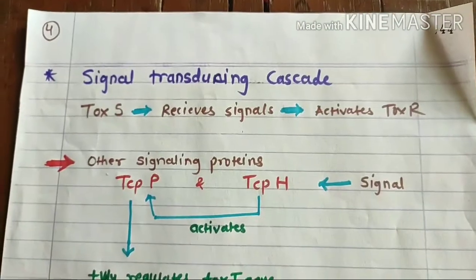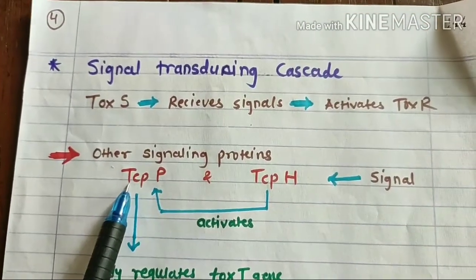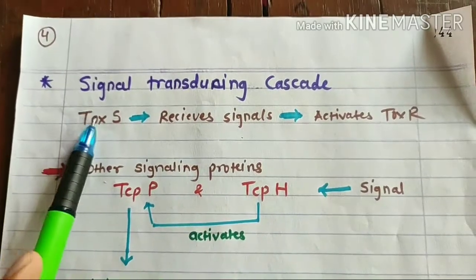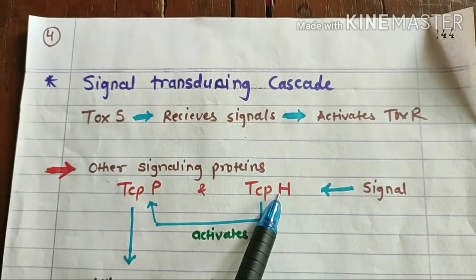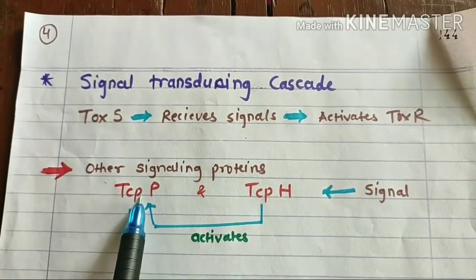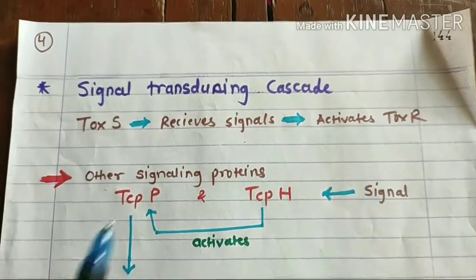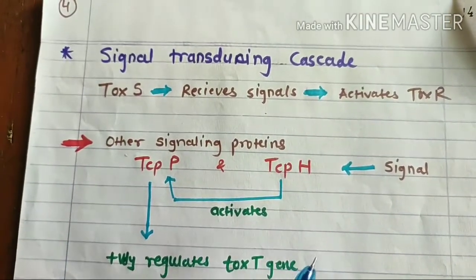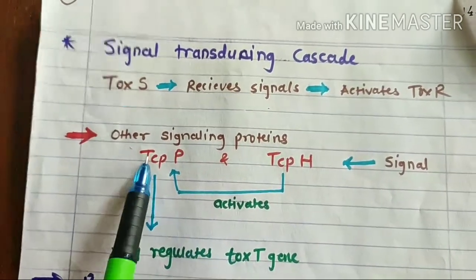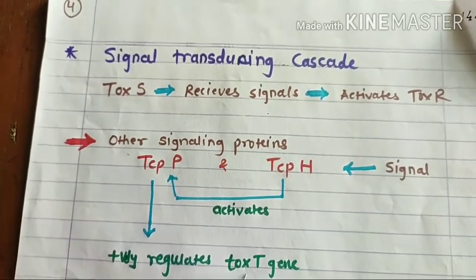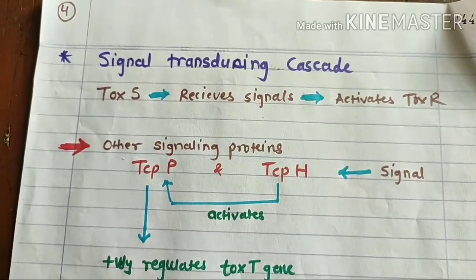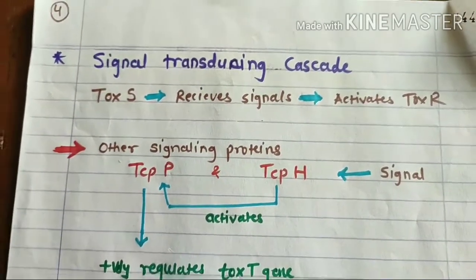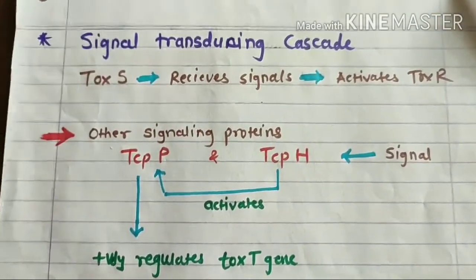There are other signaling proteins as well — TCP-P protein and TCP-H protein. The TCP-H protein is more like ToxS, meaning it senses the signal from the environment and activates the TCP-P protein. TCP-P is like ToxR. Once TCP-P gets activated, it positively regulates the tox-T gene. So both ToxR and TCP-P positively regulate the tox-T gene, meaning there are two proteins — ToxR and TCP-P — which regulate the tox-T gene, resulting in increased production of ToxT protein.